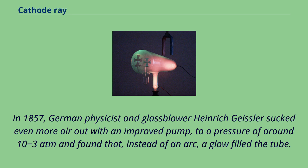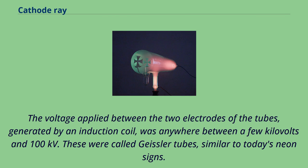In 1857, German physicist and glassblower Heinrich Geisler sucked even more air out with an improved pump, to a pressure of around 10^-3 atmospheres and found that, instead of an arc, a glow filled the tube. The voltage applied between the two electrodes of the tubes, generated by an induction coil, was anywhere between a few kilovolts and 100 kilovolts. These were called Geisler tubes, similar to today's neon signs.